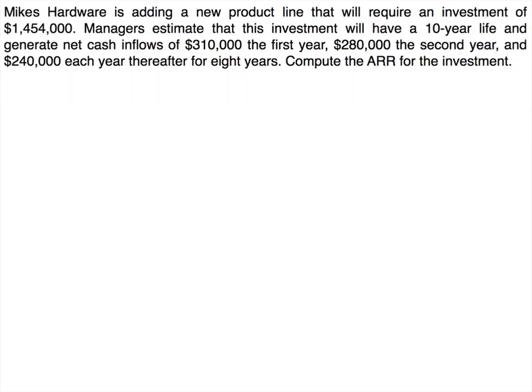Let's try one more example. Mike's Hardware is adding a new product line requiring an investment of $1,454,000. Managers estimate a 10-year life with net cash inflows of $310,000 in year one, $280,000 in year two, and $240,000 each year for the remaining eight years. We previously computed the payback period for this investment; now we're computing the ARR. Pause and pick which form of the ARR formula you need.